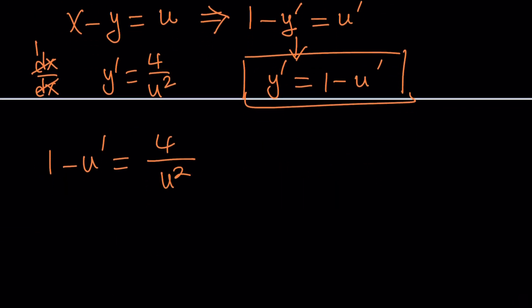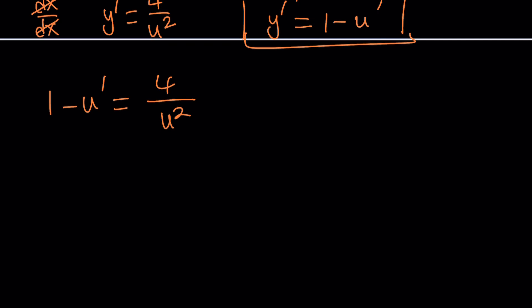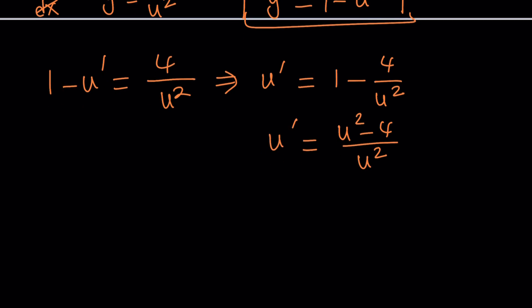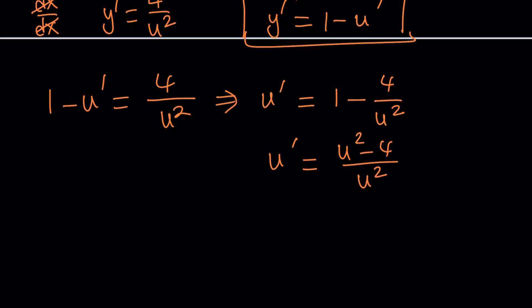This basically takes us from the y world to the u world, and of course we can always back substitute. Our goal is to make this a solvable equation, and it makes sense to isolate u prime. Go ahead and switch these again — u prime can be written as 1 minus 4 over u squared, or you can write it as u squared minus 4 divided by u squared. We made a common denominator. This is u prime, and this is a separable differential equation.